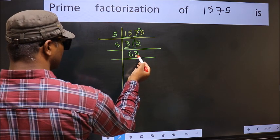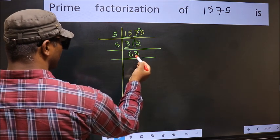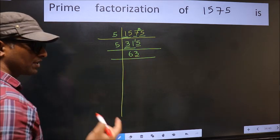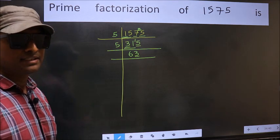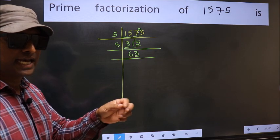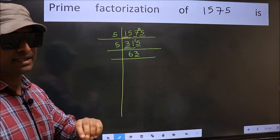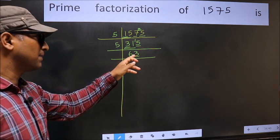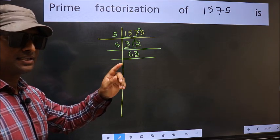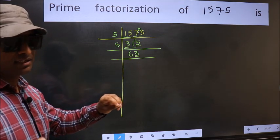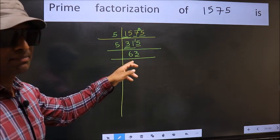Now, last digit 3 not even, so not divisible by 2. Next, prime number 3. To check divisibility by 3, we should add the digits. What I mean is, 6 plus 3, 9. And 9 is divisible by 3. So, this number also divisible by 3.